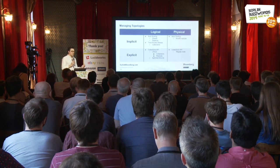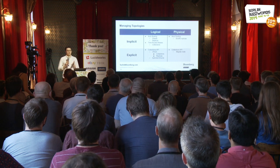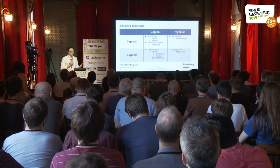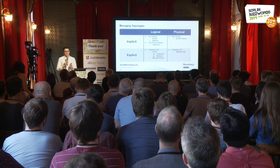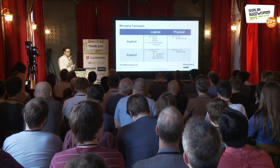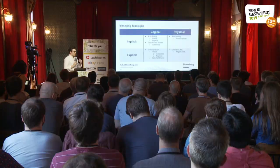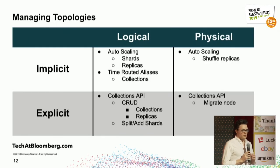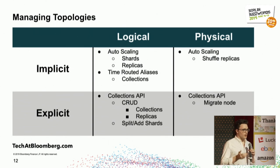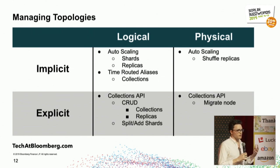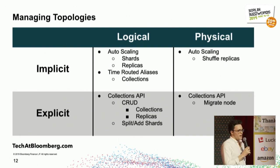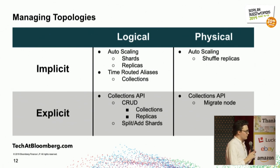There are also time-routed aliases which, based on the data within your collection, spin up new collections or delete old ones if you don't need that data anymore. There are also many explicit APIs provided by the Collections API that let you manage this logical topology, such as CRUD operations around collections, replicas, and shards — creating them, splitting them, and so on — as well as managing your schemas in these collections.